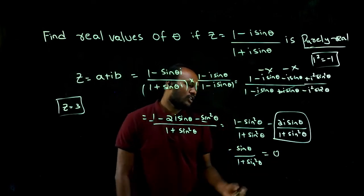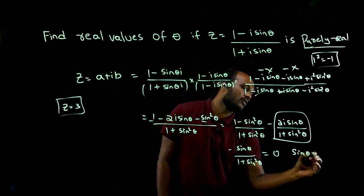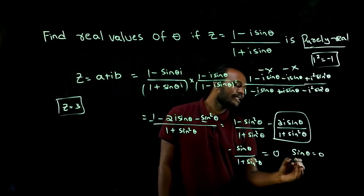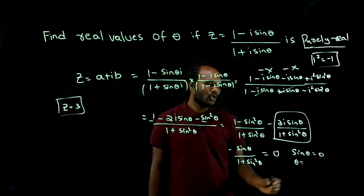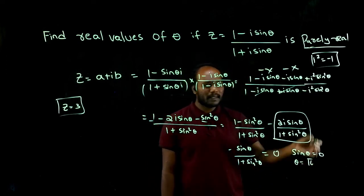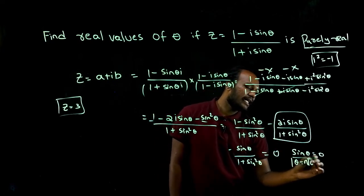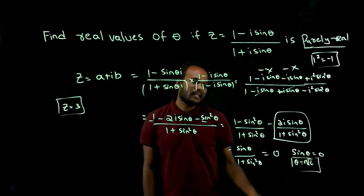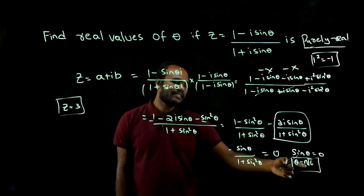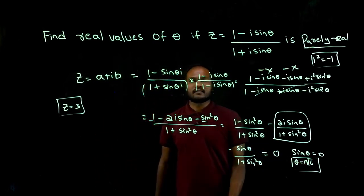So I can send this sum here. So sine theta is equal to zero. When theta is zero, theta is zero at pi, one pi, two pi, three pi, all the pi. So I can write theta value as n pi. The real value of theta where it becomes zero is theta value equal to n pi.